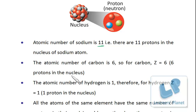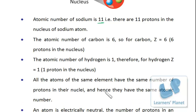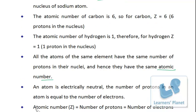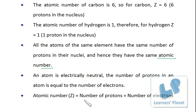The atomic number of hydrogen is 1, meaning there is 1 proton in the nucleus of the hydrogen atom. All atoms of the same element have the same number of protons in their nuclei, hence they have the same atomic number. Since an atom is electrically neutral, the number of protons equals the number of electrons.